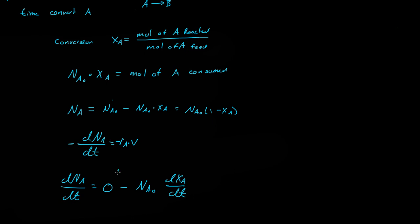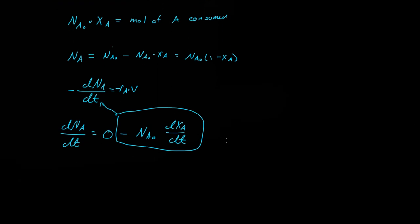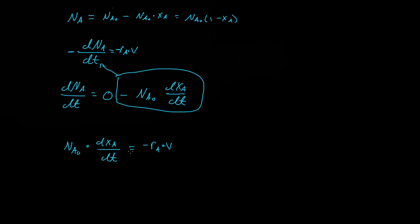So now we can actually plug this part in for that. So we'll plug that right there, and what we get is, we get a positive NA naught, or the initial amount of A in the reactor that we feed into the reactor, times dXA over dt is equal to a negative reaction rate A times V. And with a little bit of rearrangement,